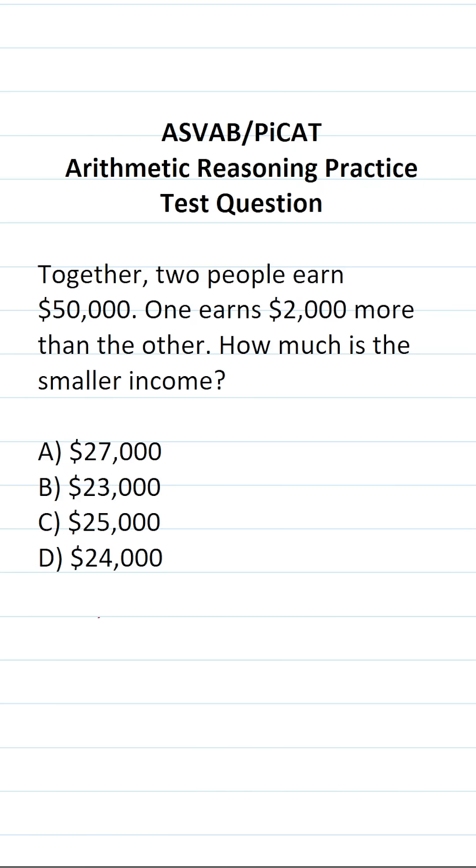One person makes X dollars, the other person makes, according to the problem, $2,000 more than the other. So if one person makes X dollars, the other person is going to make X dollars plus $2,000. And we know that together they earn $50,000.